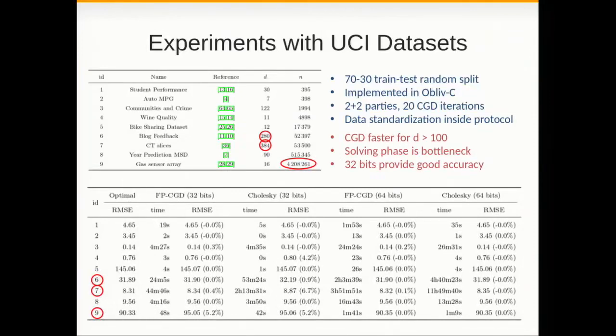So we ran the algorithm on a bunch of real data sets from the UCI repository. The results are in the paper, but I wanted to highlight a few things here. If you look at this data set where you have 50,000 records and 280 features, when we run CGD it takes like 30 minutes, while Cholesky with 32 bits takes close to one hour and it has less accuracy. The CGD version is as accurate as the floating point version. So CGD is indeed better for bigger number of features.